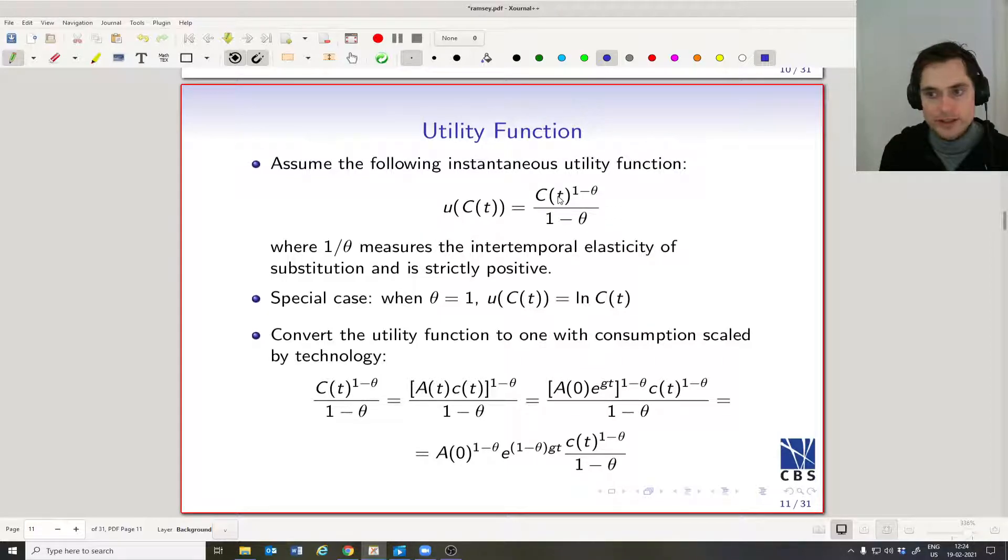This is called the constant relative risk aversion utility function, and it's very common in macroeconomics simply because it's quite easy to work with—it's just consumption to some power. In this setup, 1/θ is going to be our measure of the intertemporal elasticity of substitution. If 1/θ is very large, meaning there's a very high elasticity of substitution, then I don't really care about smoothing my consumption. I'm okay having lots of consumption one period and then very little consumption the next period if that gives me more total consumption.